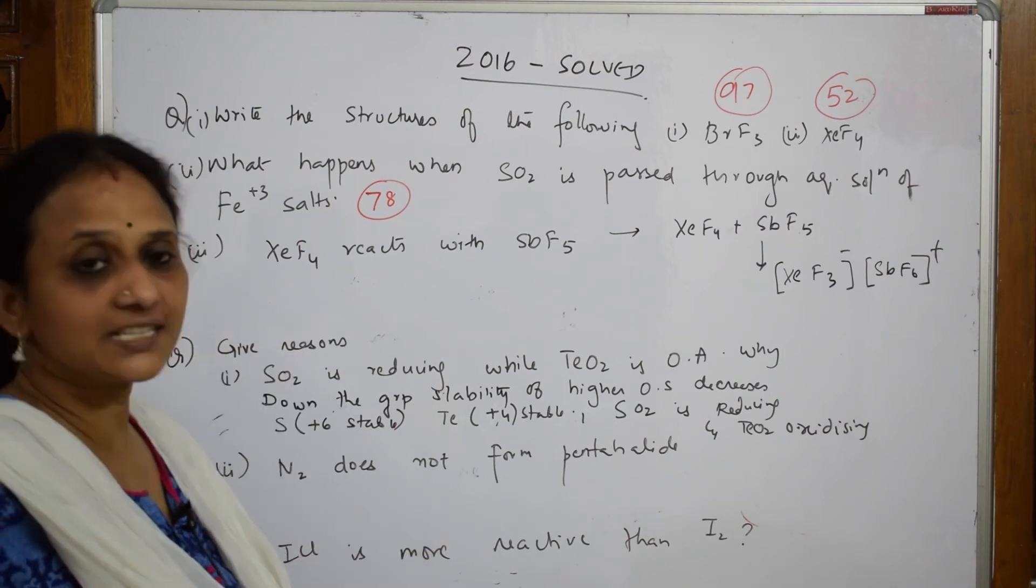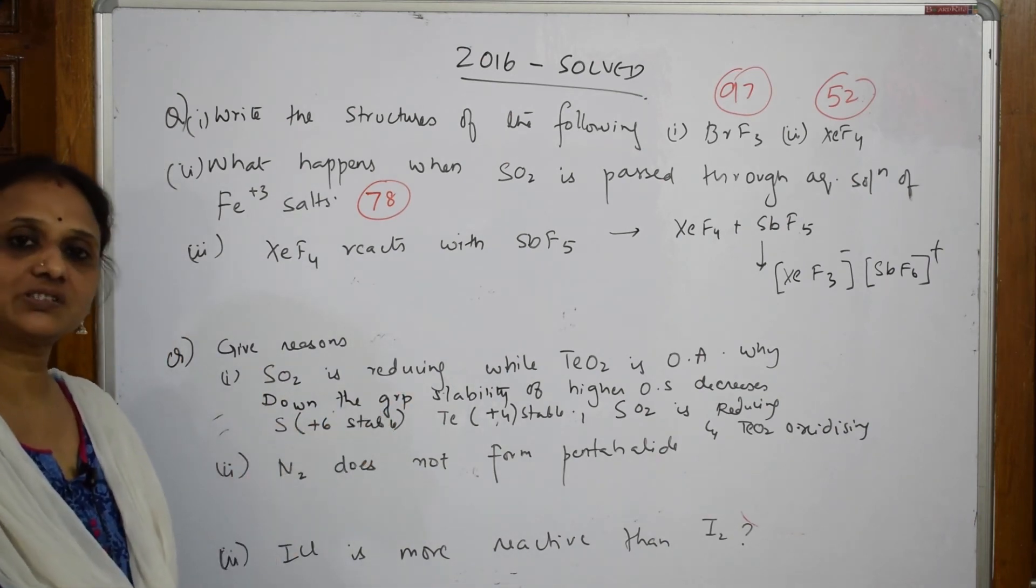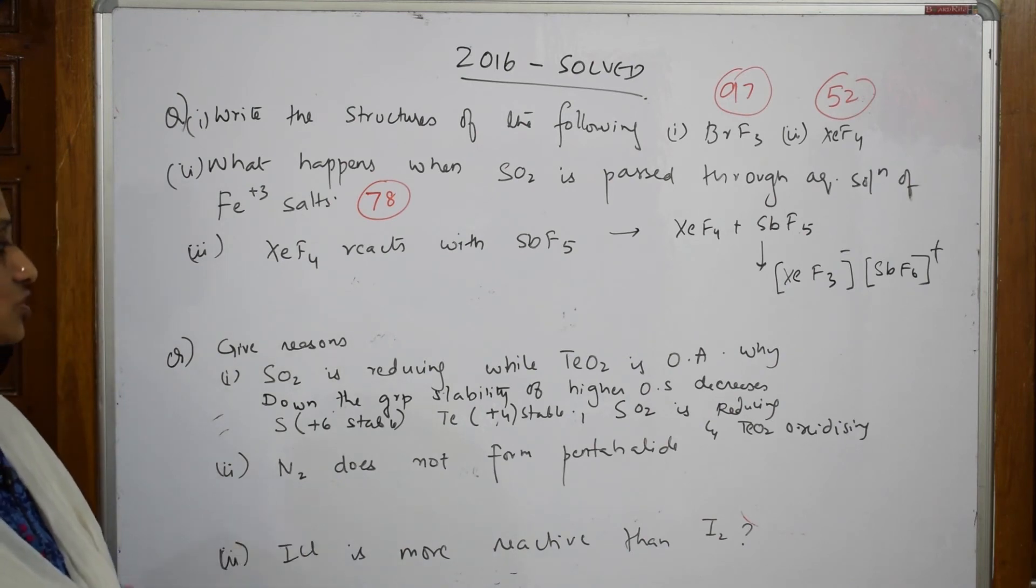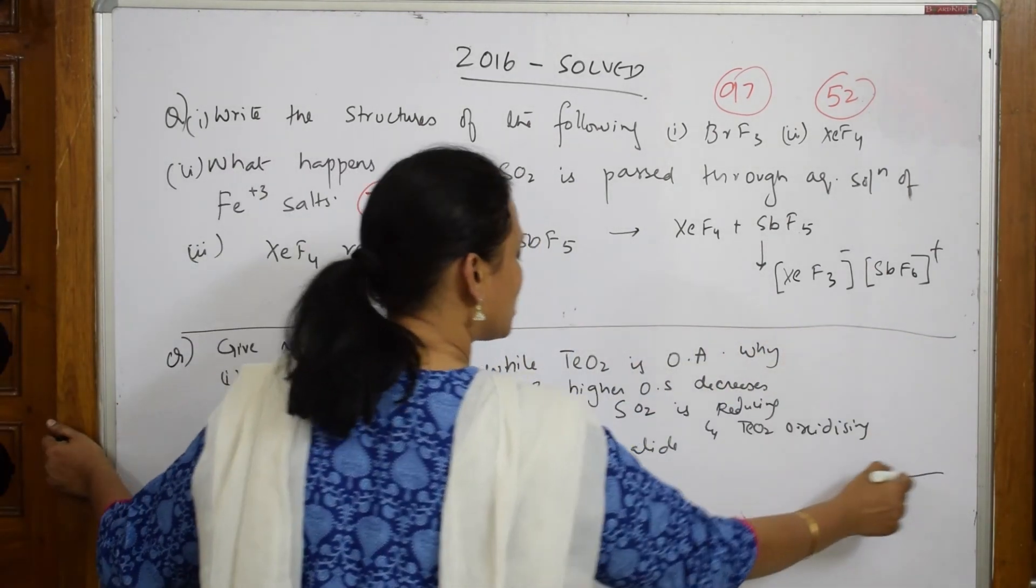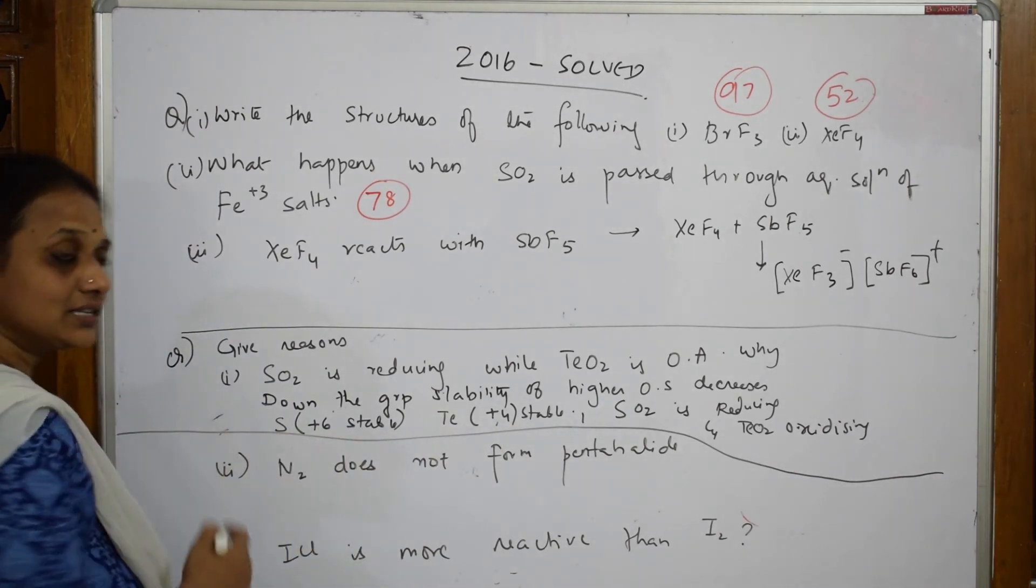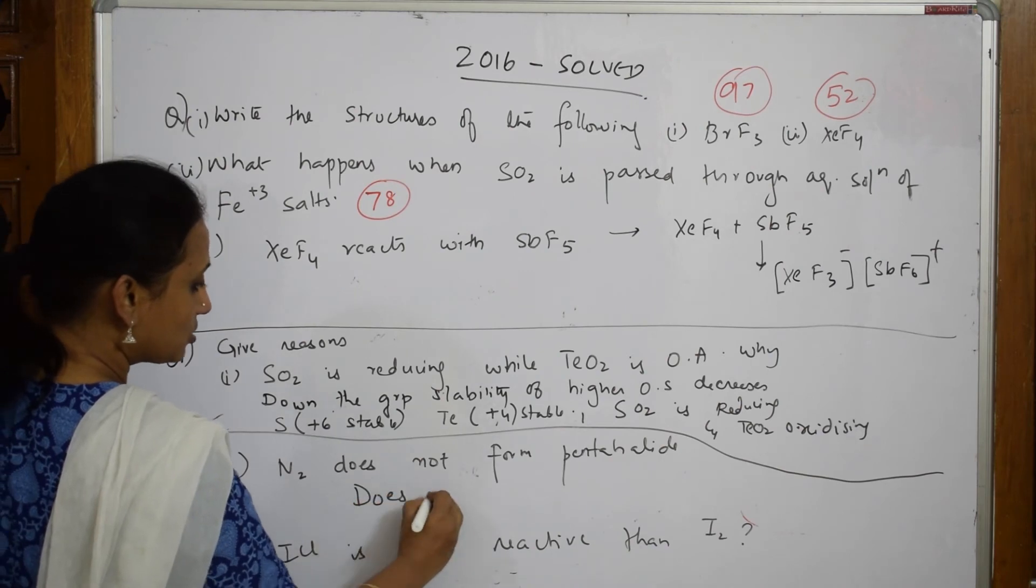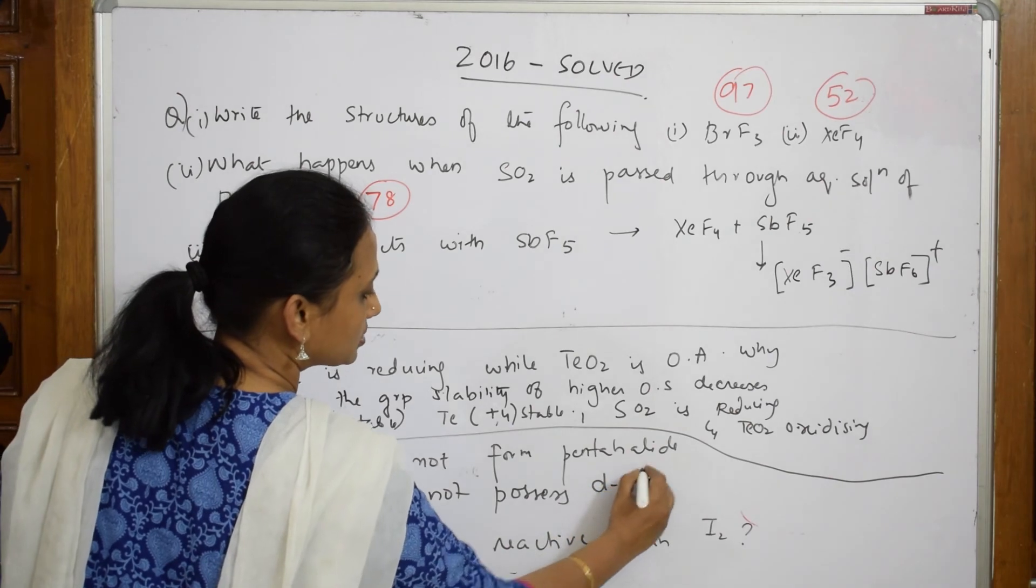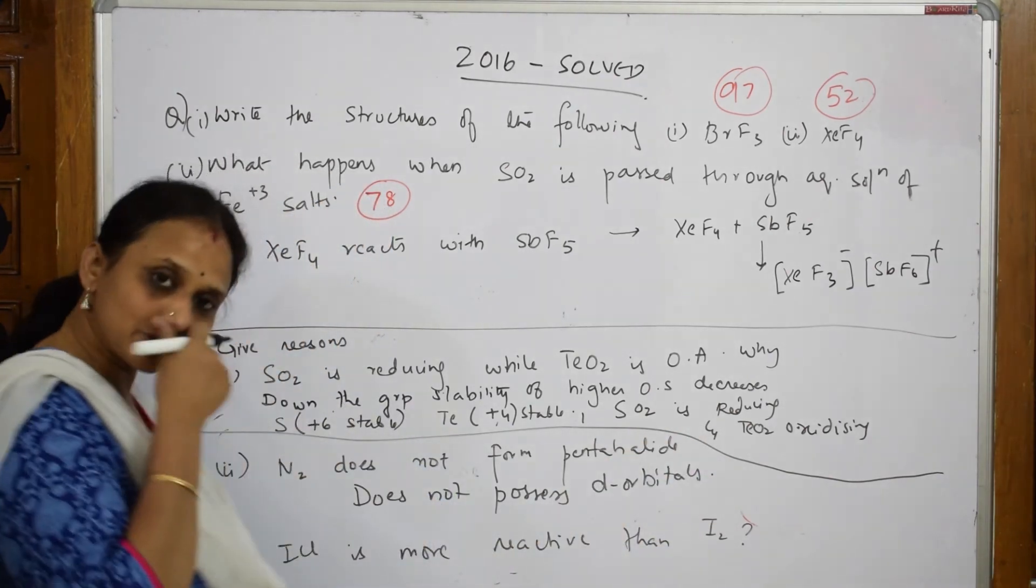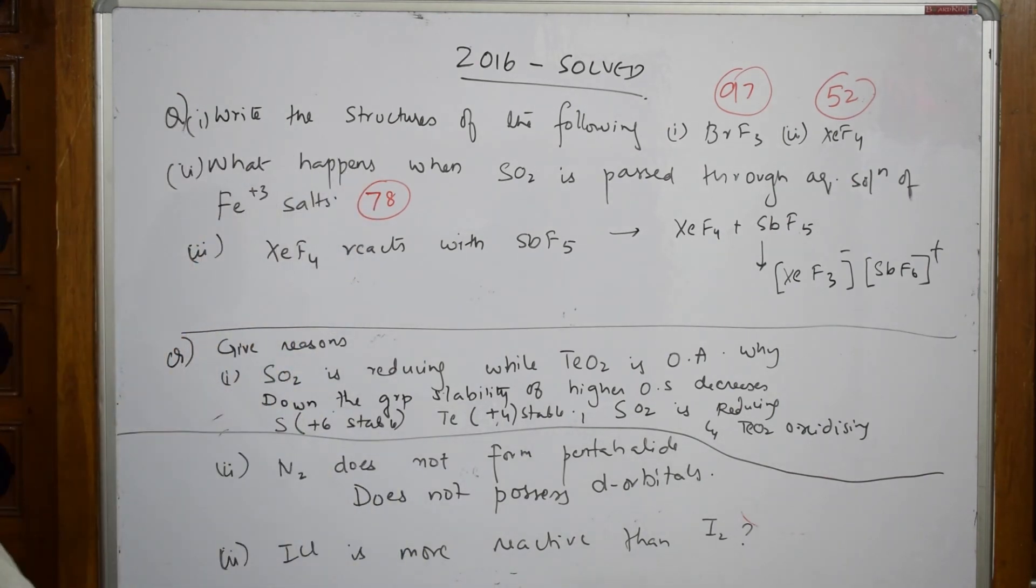Now let us come back. N2 does not form pentahalides. Why is N2 not forming pentahalides? When something has to form pentahalides, you should possess d orbitals. Simple: nitrogen does not possess d orbitals. When it does not possess d orbitals, automatically it does not form pentahalides.